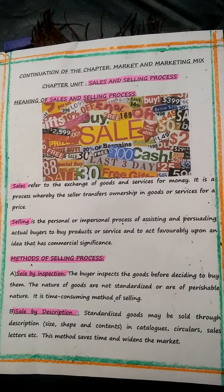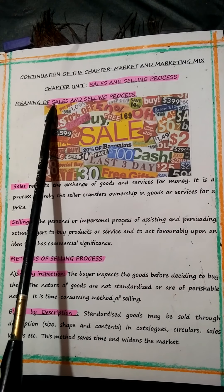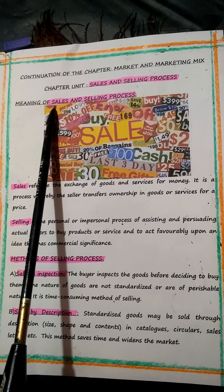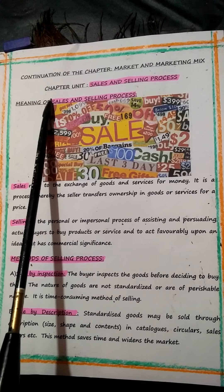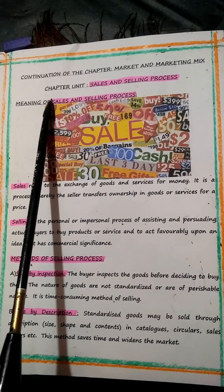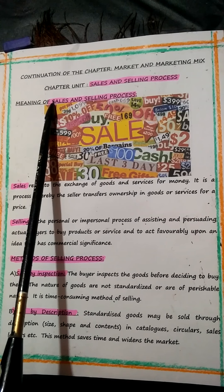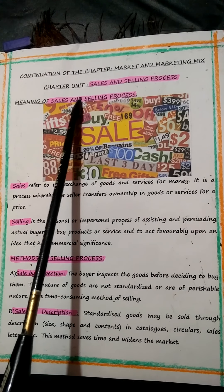Please make note of this, children: nothing happens until somebody sells something. Sales is nothing but a part of marketing — the sales and selling process is part of marketing. Nothing happens until somebody sells something. That means selling is the essence of all business activities and the growth of the economy.